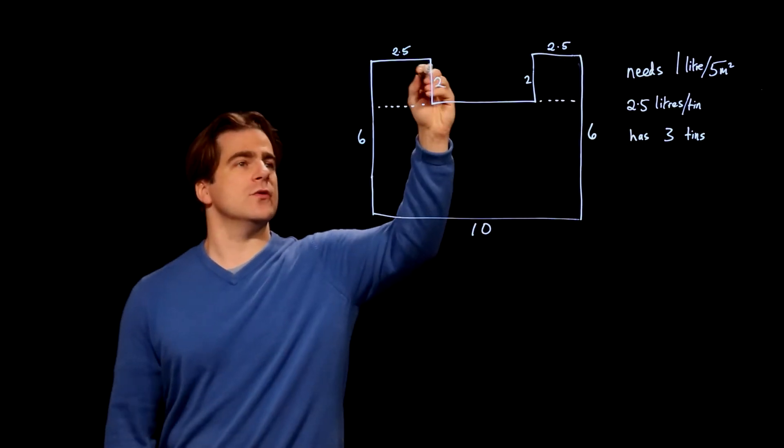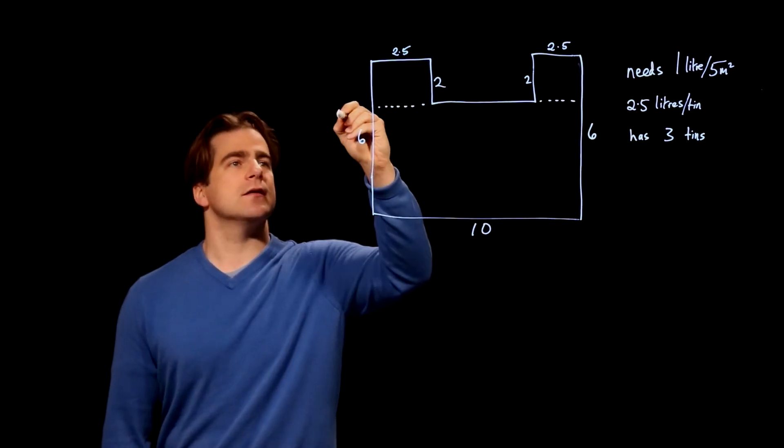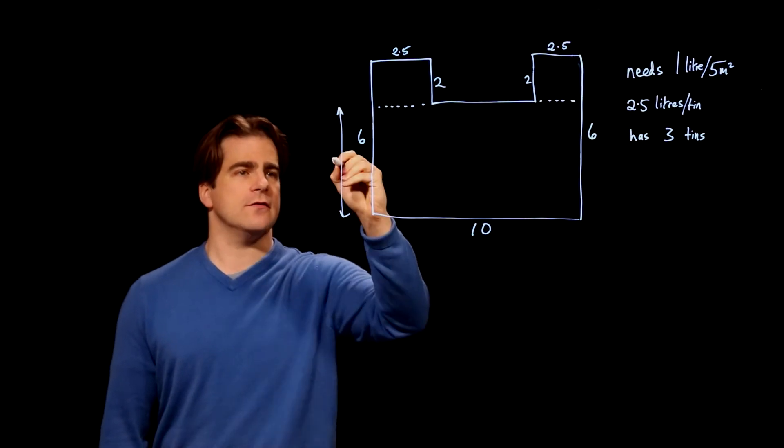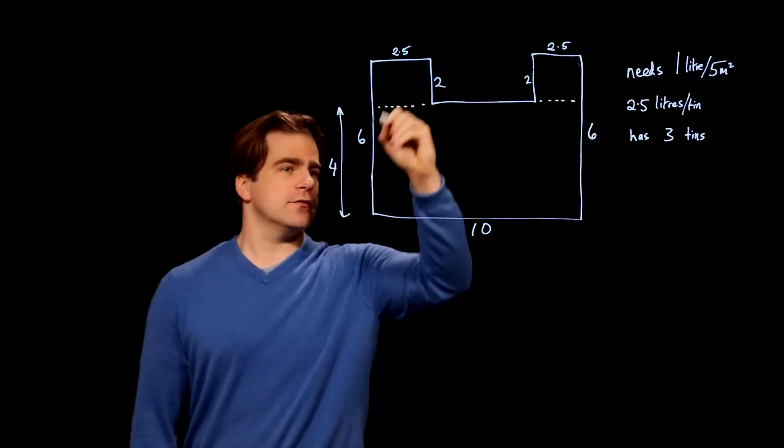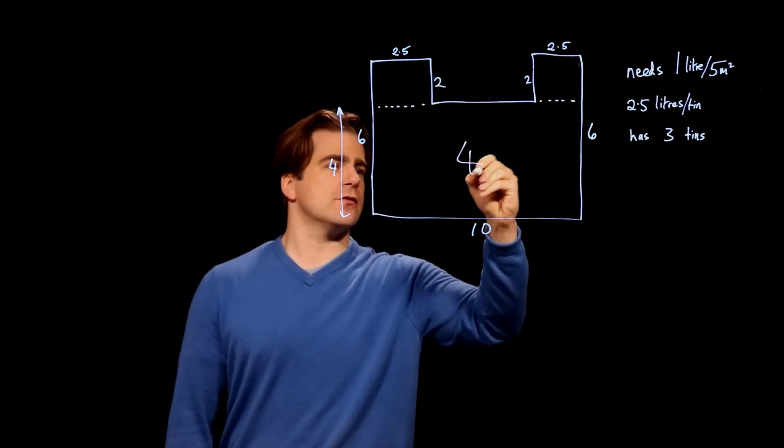Okay, so if that's 2 and that's 6 then that must be 4. So 4 times 10, this bit, is 40 metres squared.